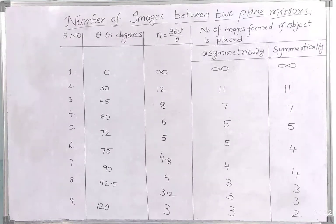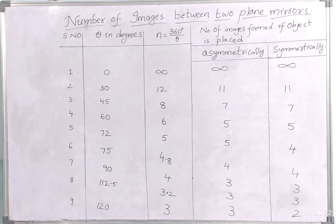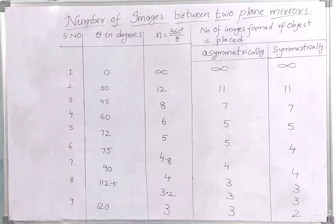If two plane mirrors are kept at an angle theta, the number of images formed is given as follows. If the position of the object is asymmetrical with respect to the two plane mirrors, it is given as n = 360/theta. If 360/theta is even, we do minus 1. If we get an odd number, we leave it as 360/theta — no need to do minus 1.